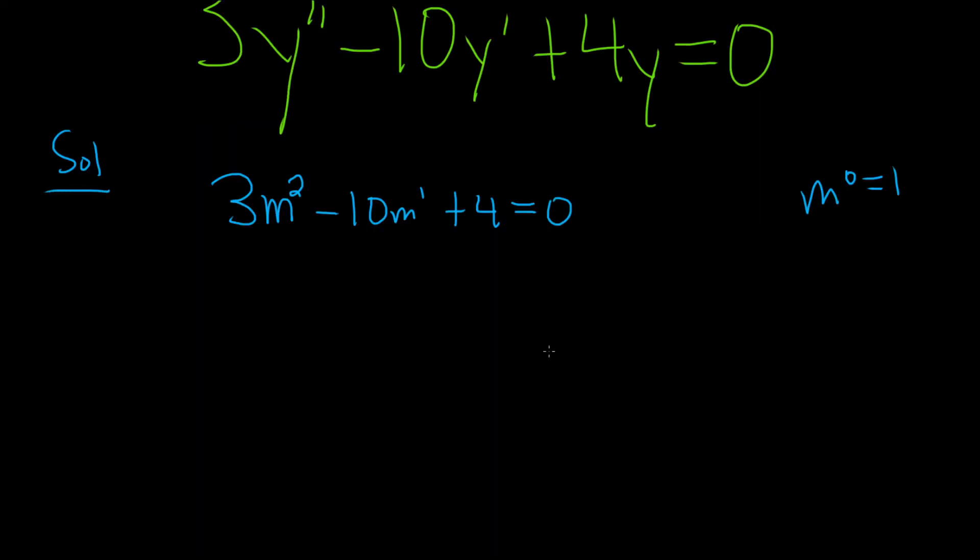So to solve this, we could attempt to factor it, we could complete the square, or we could use the quadratic formula. Let's go ahead and try to use the quadratic formula. So this is going to be our a, so a is equal to 3. And then b is going to be negative 10. And then c will be equal to 4.